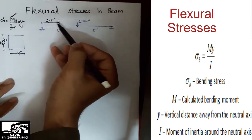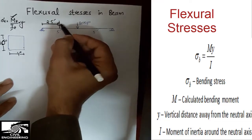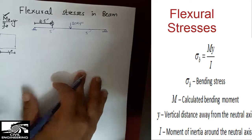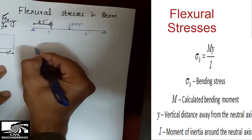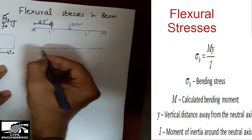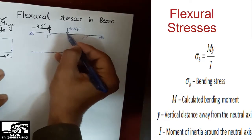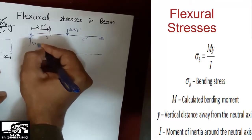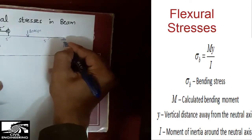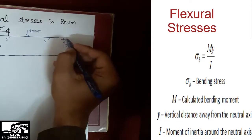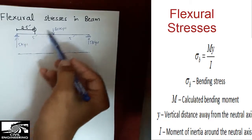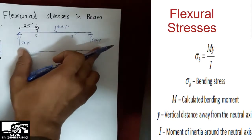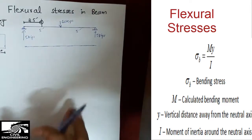To find the moment, we first need to find the shear forces. Since the 10 kip load is acting at the midpoint of a simply supported beam, by symmetry, 5 kips will be transferred to the left support and 5 kips to the right support. There is no horizontal load, so no axial resistance is needed, and the full load is distributed equally to the two supports.